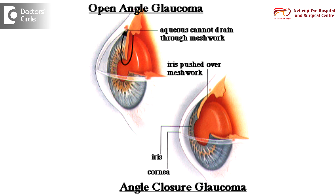Basically, glaucoma is divided broadly into two categories: open angle glaucoma and angle closure glaucoma. This differentiation is based on the fact that the fluid in the eye, which is called the aqueous humor, is constantly produced from one area called the ciliary body and then moves out of the eye through another area called the trabecular meshwork.